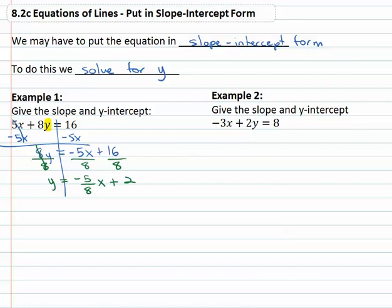Now we should be able to quickly identify the slope and y-intercept because we solved for y. We know y equals mx plus b so m, my slope, must be negative 5 eighths and b, my y-intercept, must be 2.